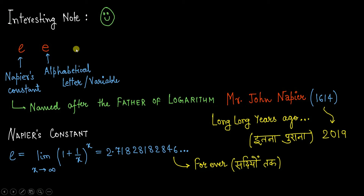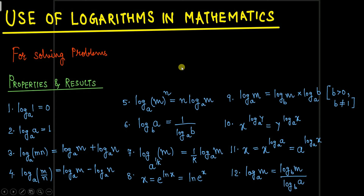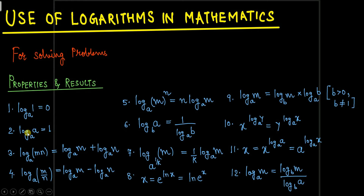Now, how to use logarithms to solve problems. There are properties you should learn by heart. Property 1: log 1 to the base a equals zero — regardless of the base, log 1 is always zero. Property 2: log a to the base a equals one, because log a divided by log a cancels to give one.